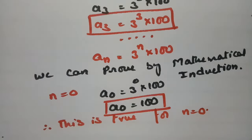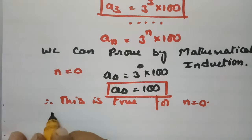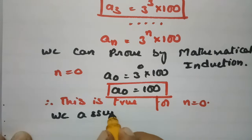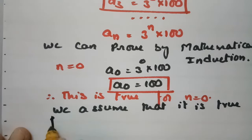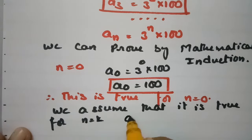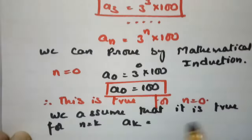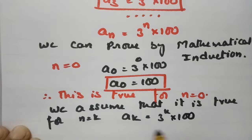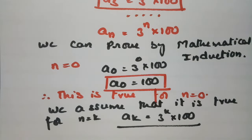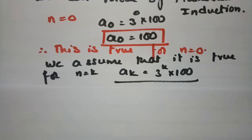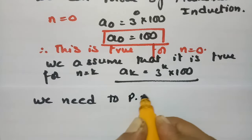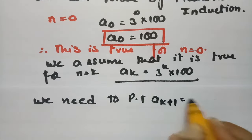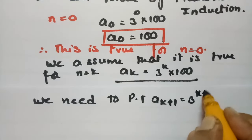We assume that it is true for n equal to k. Therefore AK equals 3 to the power K into 100. Next we have to prove that it is true for n equal to k plus 1, that is AK plus 1 equals 3 to the power K plus 1 into 100.